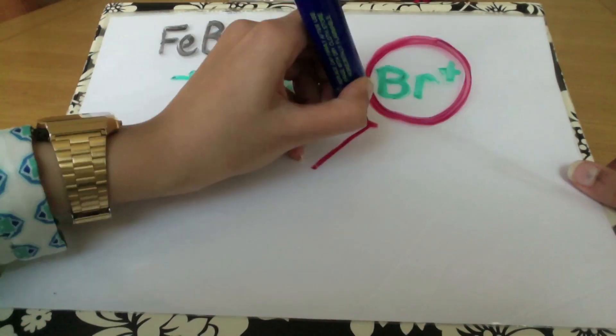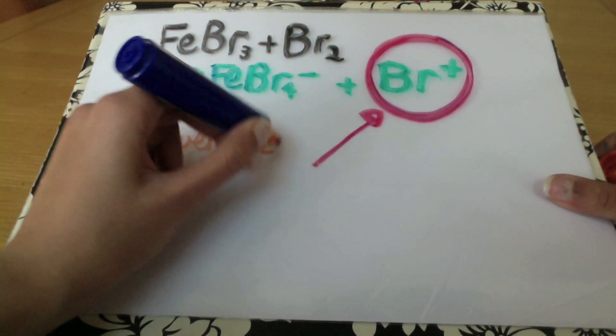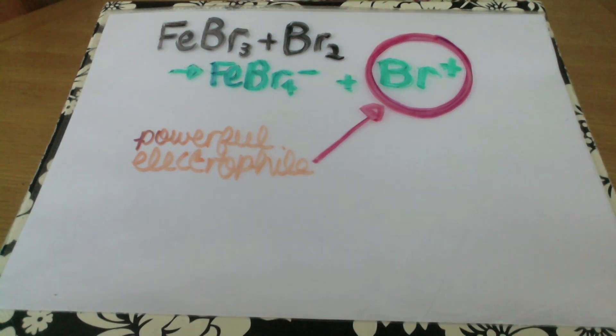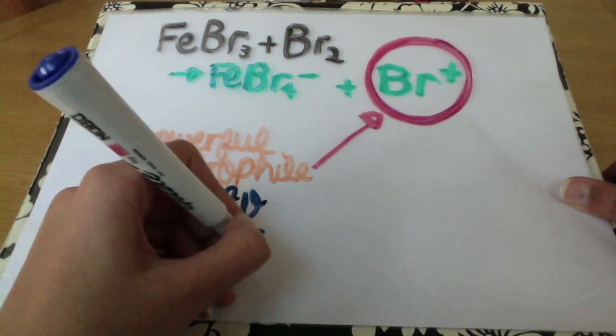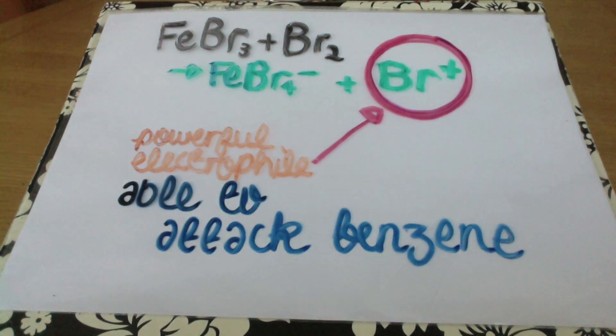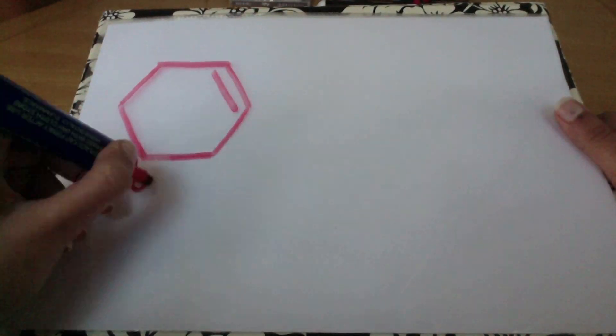It uses the catalyst to create a powerful electrophile in the form of a Br+ ion. Now, because this ion is a powerful electrophile, it can attack the benzene ring and make the reaction happen.